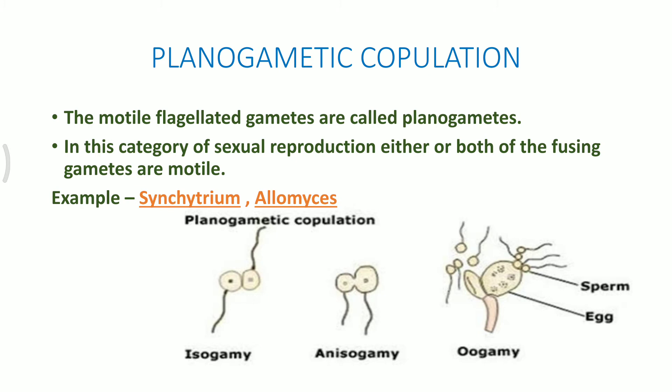The first type is planogametic copulation. In this, the motile flagellated gametes are called planogametes. In the fusion, one of the gametes is either movable or motile whereas another one is not motile. In some other cases, both of them will be motile but of two different shapes and sizes, whereas in the third category, both of them will be similar in shape, size, and motility.